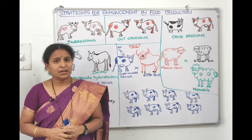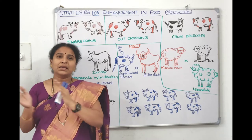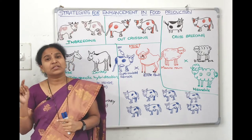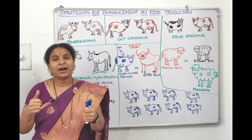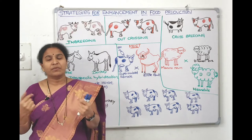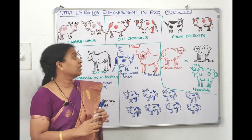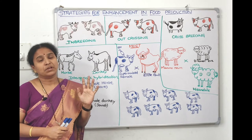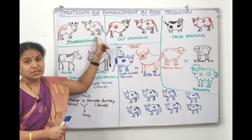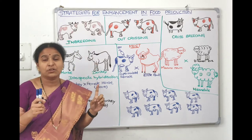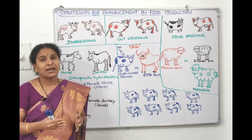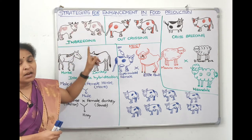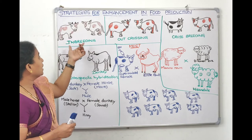Animal breeding is divided into two types: inbreeding and outbreeding. Inbreeding is breeding within the same breed — for example, a Sahiwal cow with another Sahiwal cow, or Sindhi variety with another Sindhi variety. Both individuals belong to the same breed. A breed is a group of individuals with similar morphological appearance — same size, structure, behavior, and configuration. Mating between male and female of the same breed is called inbreeding.